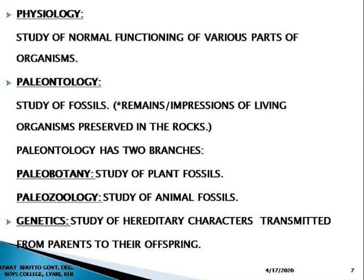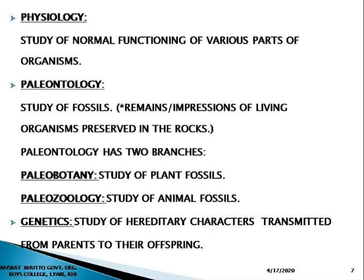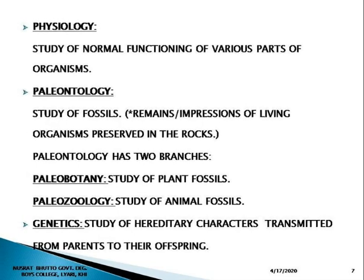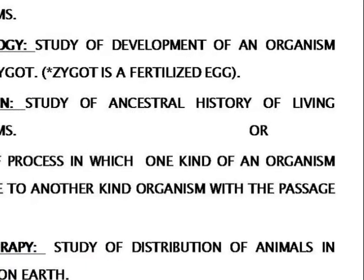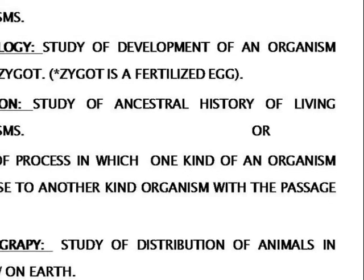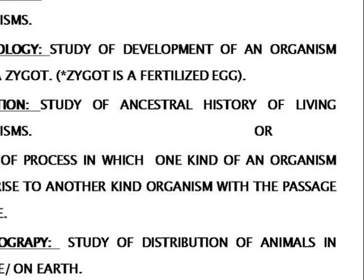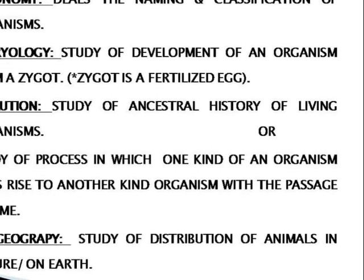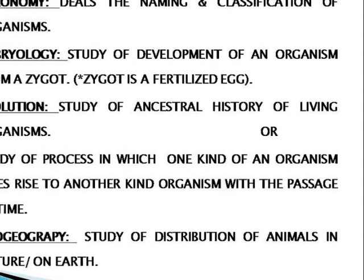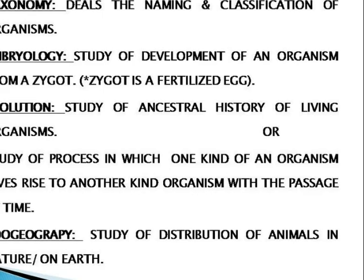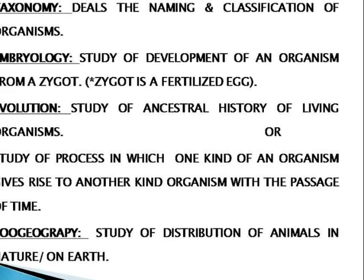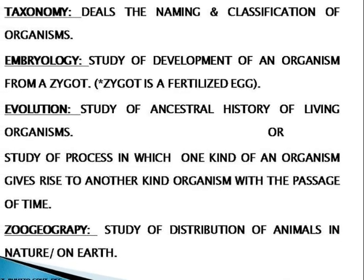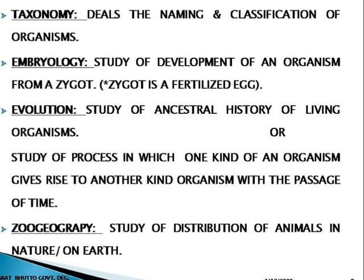Genetics: the study of hereditary characters transmitted from parents to their offspring. Taxonomy: deals with the naming and classification of organisms. Embryology: the study of development of an organism from a zygote, which is a fertilized egg. Evolution: the study of the ancestral history of living organisms, or the process in which one kind of organism gives rise to another kind with the passage of time.